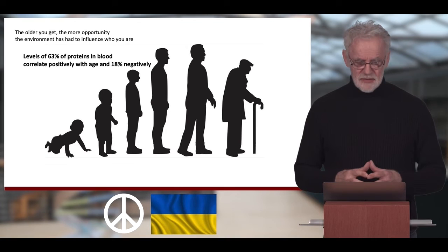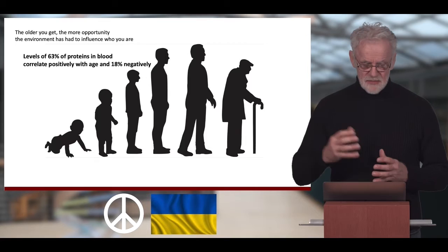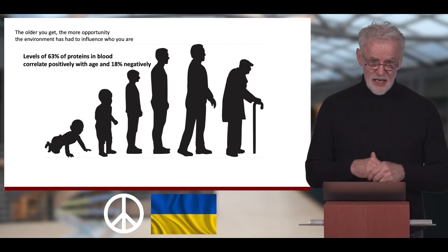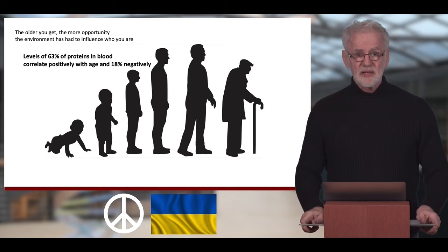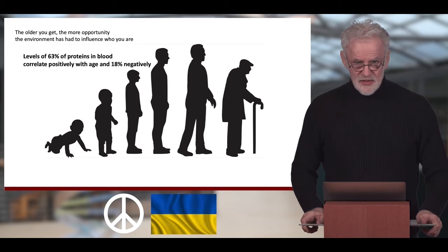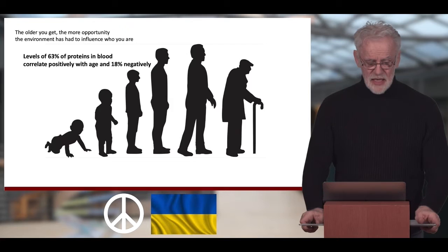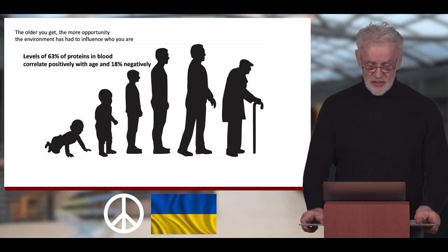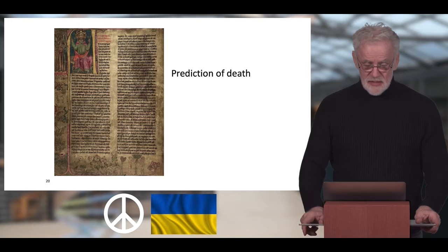As we grow older, the environment has had a bigger opportunity to affect us. We are stuck pretty much with the same variants in the germline genome from conception to death, but the environment continues to affect us throughout our life. In the context of proteins serving as a big net to catch influences of the environment, basically 81% of proteins in blood correlate with age — 63% positively and 18% negatively.